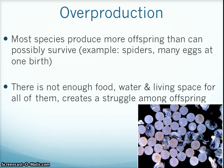There are different things that can influence selection. Overproduction is an example. Most species produce more offspring than can possibly survive. Examples include spiders, because they lay many eggs at one birth. There is not enough food, water, and living space for all of them, and this creates a struggle among the offspring. The ones with the advantageous variations will survive and hopefully reproduce so they can pass on their advantageous traits to their offspring.